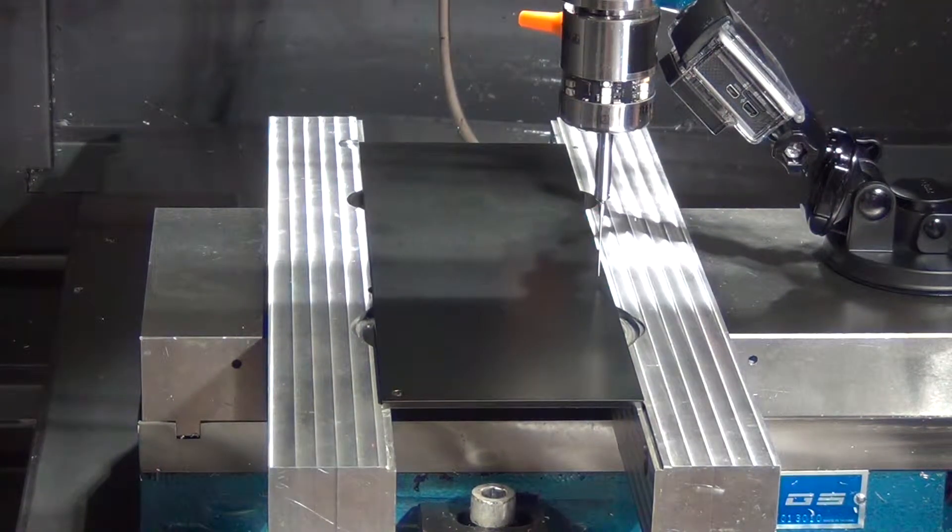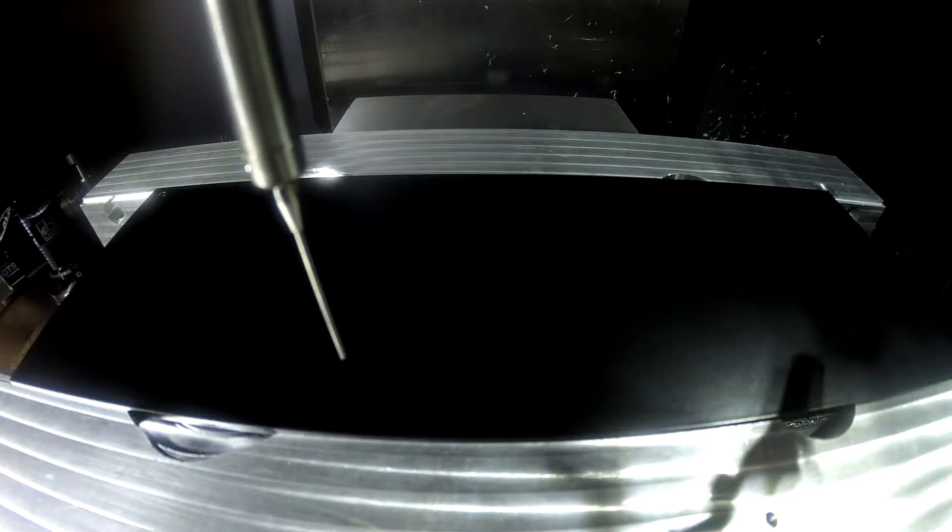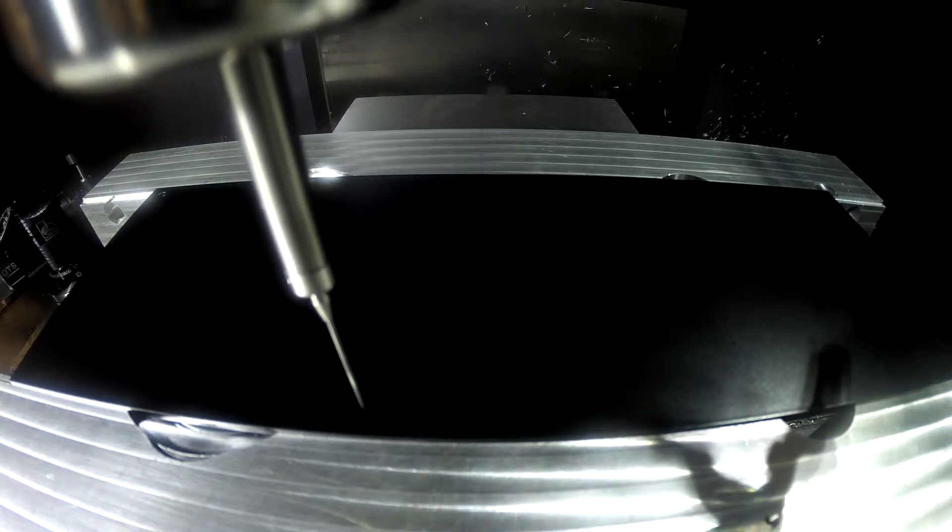Our sheet metal engraving is done on our high-speed 3-axis vertical CNC milling machine using your CAD drawing.